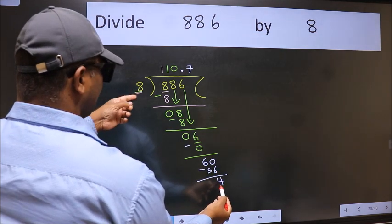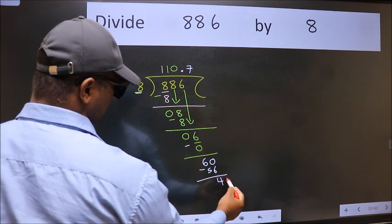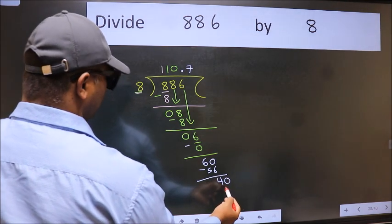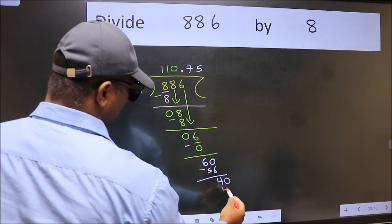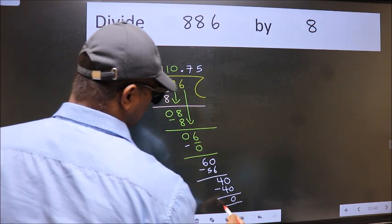4 is smaller than 8. We already have the decimal, so take 0. 40. When do we get 40 in 8 table? 8 5's 40. Now we subtract. We get 0.